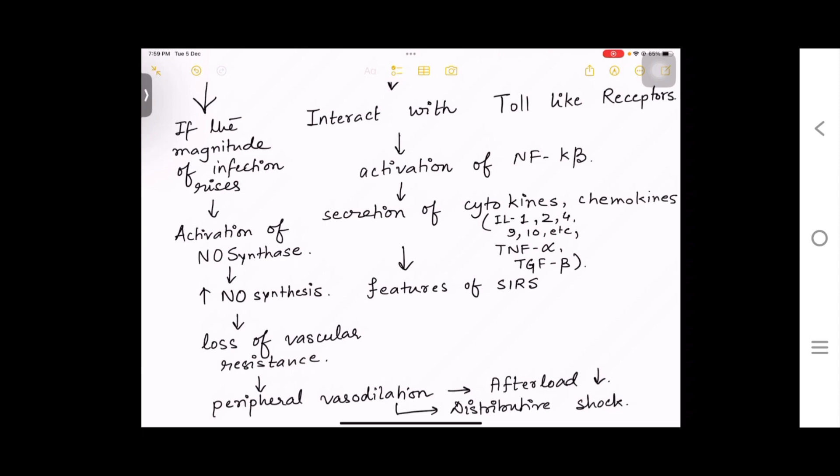Now one question arises: how does septic shock lead to distributive shock? So if vasodilation occurs, that will lead to decrease in afterload and that will cause distributive shock. This is all about the pathophysiology of septic shock.